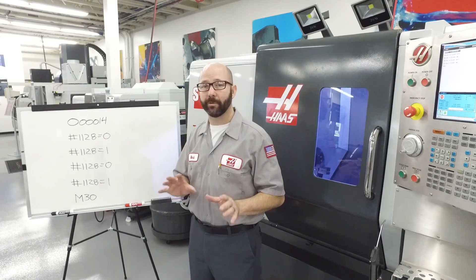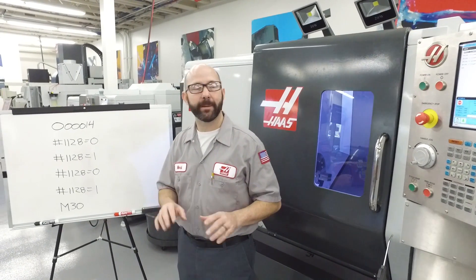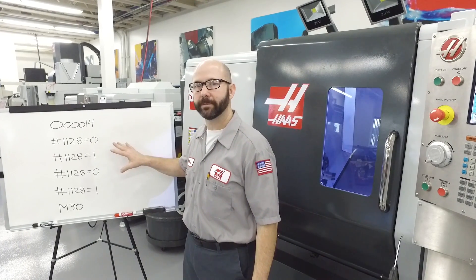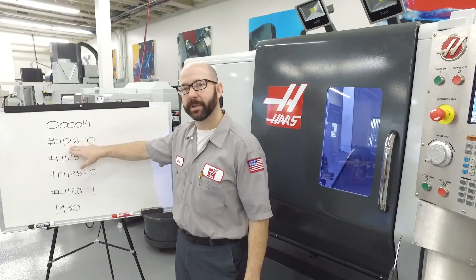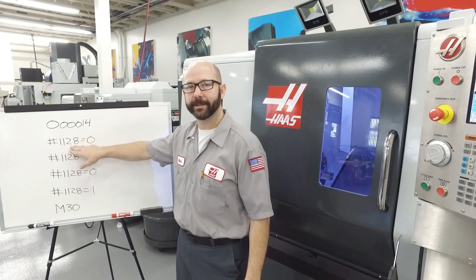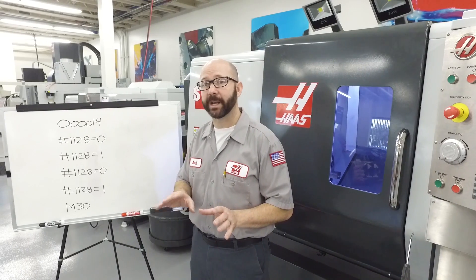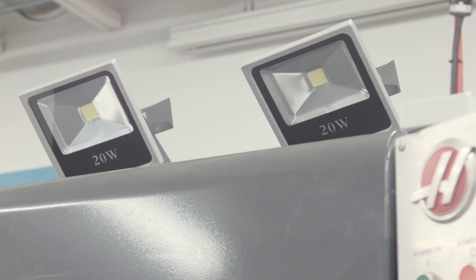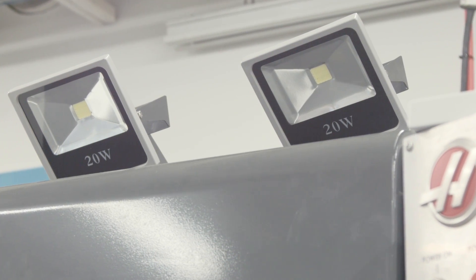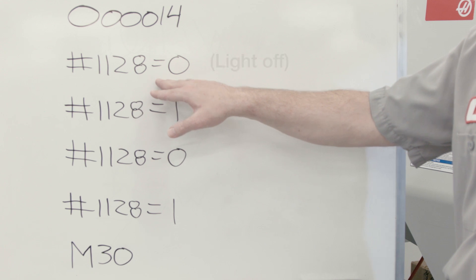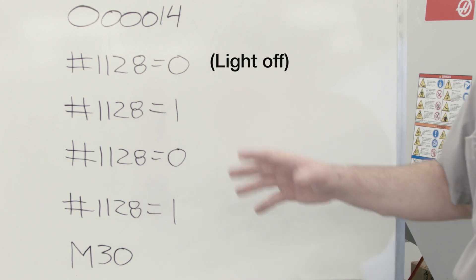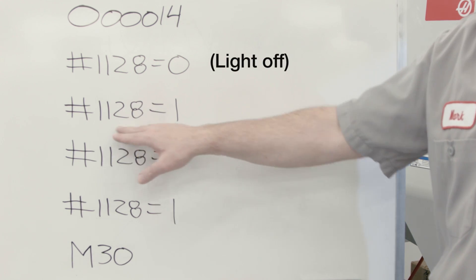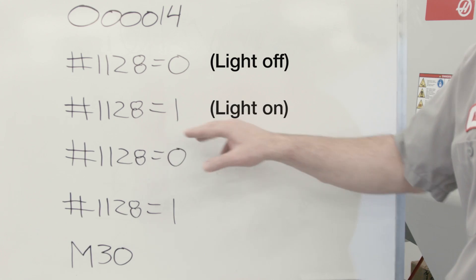I've written a short macro and put it onto our control and onto our whiteboard. We're going to use macro variable 1128. For now you just need to know that 1128 is tied to our high intensity lights mounted on top of our machine. 1128 equals zero, our light's going to turn off. 1128 equals one, our light should turn on.